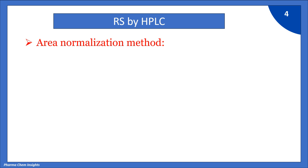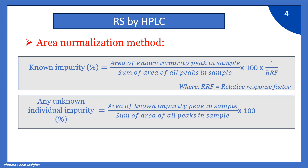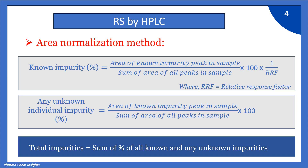First is the area normalization method. In RS we need to calculate known impurity as well as unknown impurity. The formula for known impurity percentage is: area of known impurity peak in sample, divided by sum of area of all peaks in sample, multiplied by 100, multiplied by 1/RRF, where RRF is the relative response factor. The formula for any unknown individual impurity is: area of unknown impurity peak in sample divided by sum of area of all peaks in sample, multiplied by 100. Total impurities will be the sum of percentage of all known and unknown individual impurities.